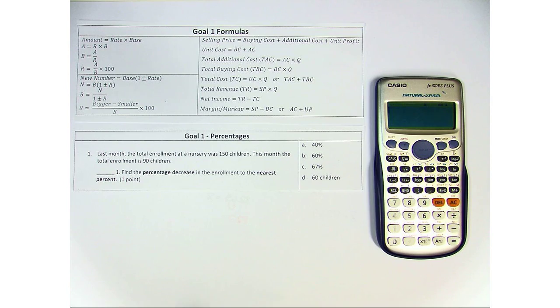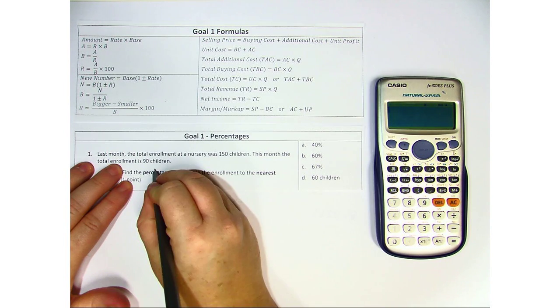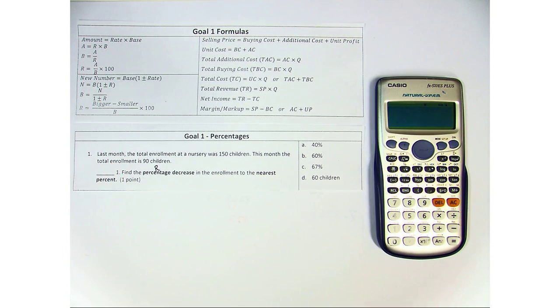We're looking for percentage decrease, so we're going to be looking for R. There are two different ways that we can find R. R is the amount over the base times 100, or R is the bigger number minus the smaller number divided by the base times 100.